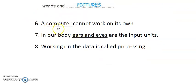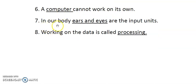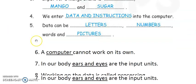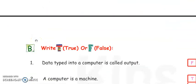A computer cannot work on its own. Number seven: In our body, ears and eyes are the input devices. Number eight: Working on the data is called process. Now these one to eight fill-ups you have to do in your copy.